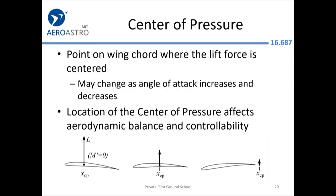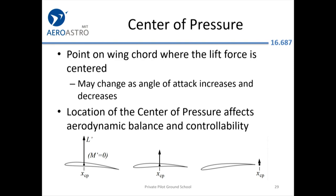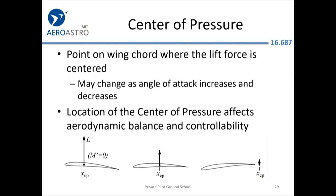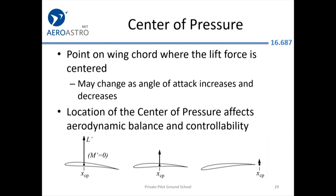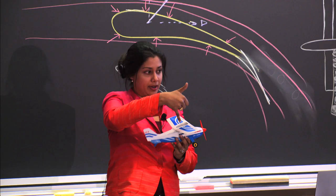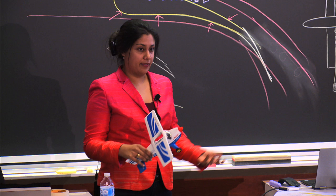Let's define the center of pressure — basically the point on the wing where the lift is centered. That can actually move based on the angle of attack. Depending on where you are, the lift might be pulling in different directions, which can affect the maneuverability of your aircraft.